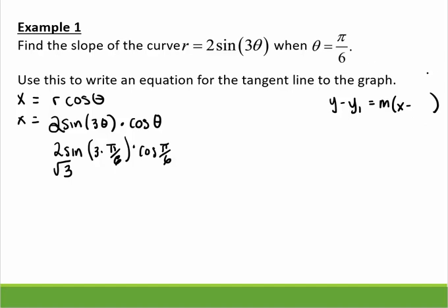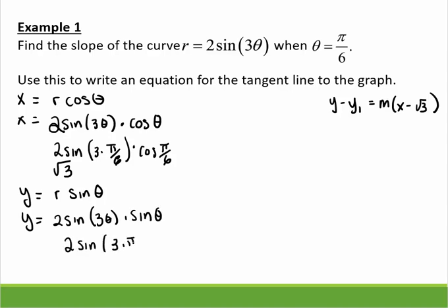My x value is root 3. Now to get the y, r sine of theta, 2 sin(3θ) times sine of theta, again plugging in π/6, I get this value to be 1. So I now have my x and my y coordinates. All I need to get is my slope.